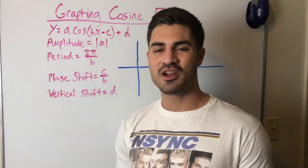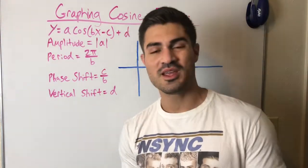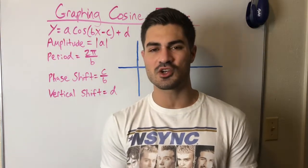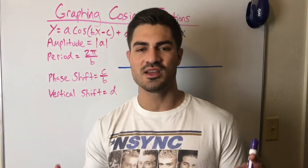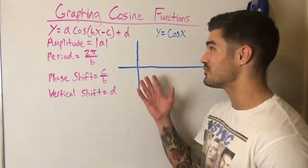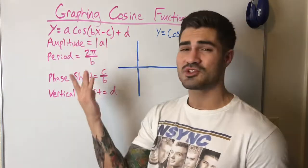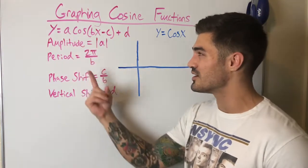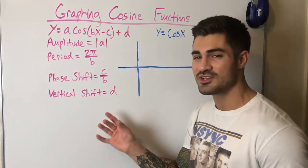I already have a detailed video on graphing sine functions — you can click right up here if you'd like to watch that. Any sine function can be expressed as a cosine function and vice versa; usually all you have to do is apply a phase shift. The general formula is the same as for sine — the only thing that changes is we have cosine instead of sine.